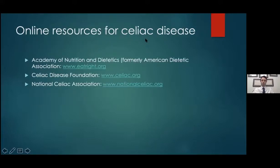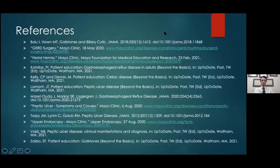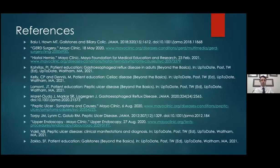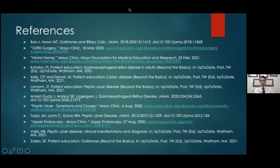These are some resources for celiac disease I wanted to highlight. A lot of the material for this presentation comes from patient-specific sources with nice figures and good explanations — things like the Mayo Clinic, Cleveland Clinic, and JAMA, the Journal of the American Medical Association, which all have good patient information. At this point I want to stop and take a look at some of the questions that have come in.